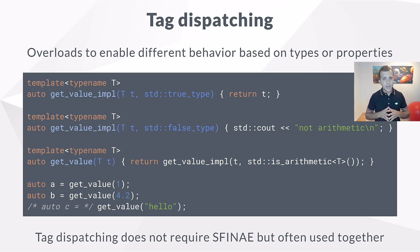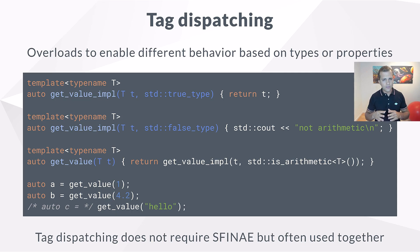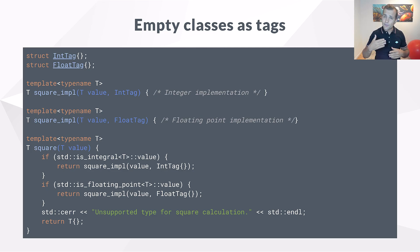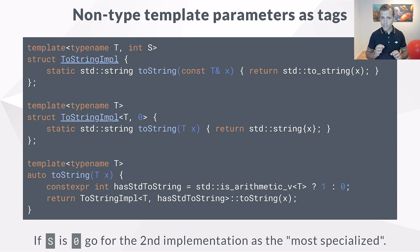Another alternative is to use tag dispatching. Unlike the previous techniques, here we can select a behavior based on a characteristic of a type. We combine templates and overloading as we select a behavior based on the tag type. If we pass a number, we call the first overload of get_value_impl, otherwise the second. We often use tag dispatching for creating our own type traits to use with SFINAE. A variant you may also come across is to use classes as tags — effectively the same thing, but now we can have more than two tags instead of just true_type and false_type.